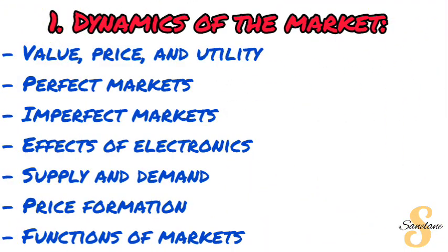In paper 2 you have microeconomics and contemporary economic issues as the main topics. Under microeconomics, the first topic is dynamics of markets, under which you have to cover value, price and utility, perfect markets, imperfect markets, effects of electronics in the market, as well as supply and demand.